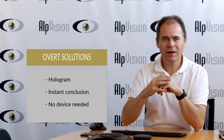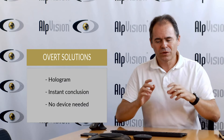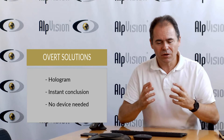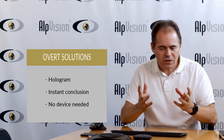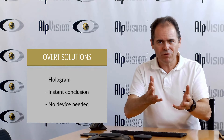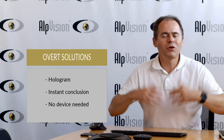So you have level one. Level one is the basic stuff, which are visible solutions like holograms for instance. You look at the product, you see the security feature, and you have a conclusion.